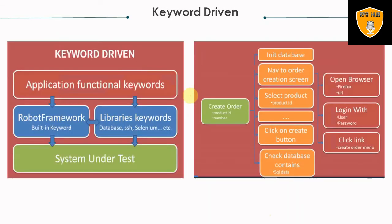When we talk about keyword-driven testing, there are application functional keywords and Robot Framework inbuilt keywords. Libraries include database, SSH, Selenium, desktop library, Excel libraries, and data-driven libraries, which can be used for ease of automating your project.